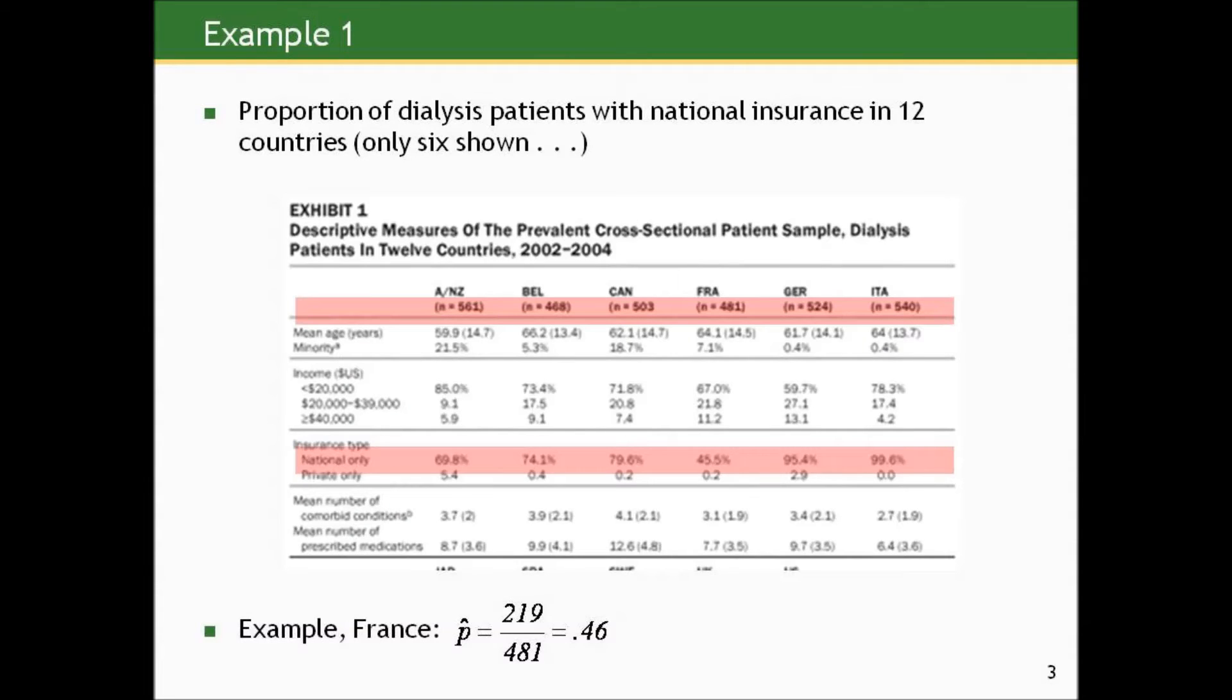So let's again go back to the example where we looked at the proportion of dialysis patients with national insurance in 12 countries. And let's hone in on France here. In France, there were 481 dialysis patients, sample of 481 dialysis patients, 219 who had health insurance, national insurance.